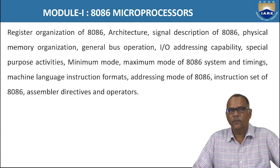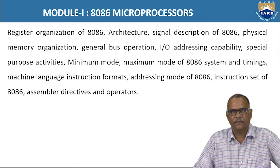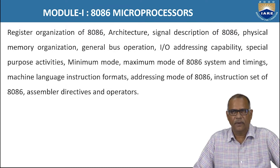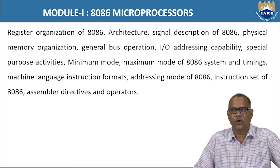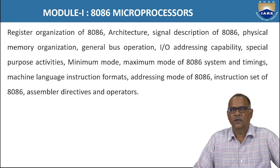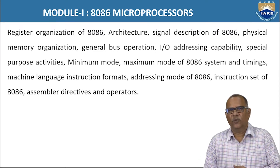The first module course structure is like this: register organization of 8086, architecture, signal description of 8086, physical memory organization, general bus operation, IO addressing capability, special purpose activities, minimum mode, maximum mode and machine language instruction formats, addressing modes and instruction sets, and assembler directives and operators.